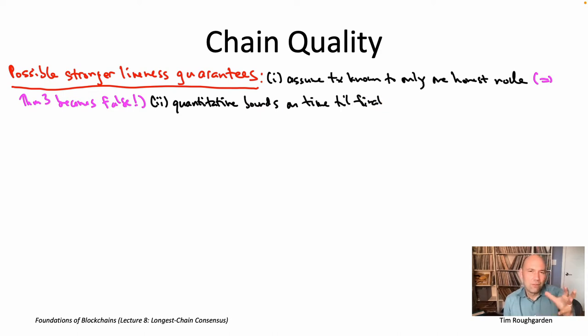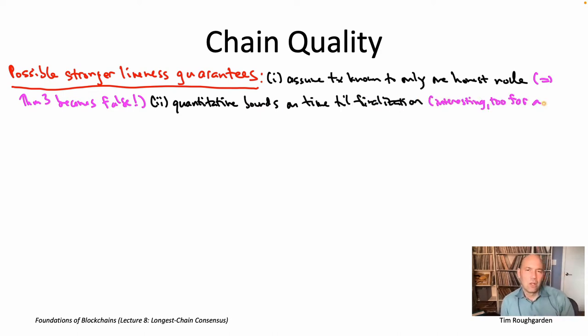The second aspect of theorem three you might find unsatisfying is it doesn't give concrete bounds on how long someone would have to wait before their transaction gets finalized. All we proved was that eventually a transaction gets finalized. You can imagine having more quantitative bounds — exactly how long does someone have to wait. That's quite interesting to study and there are nice research papers on exactly that question, but it would take us too far into the weeds. If you're interested, dig into the research literature on longest chain consensus for more concrete quantitative bounds on finalization time.